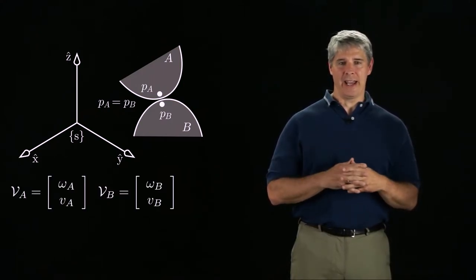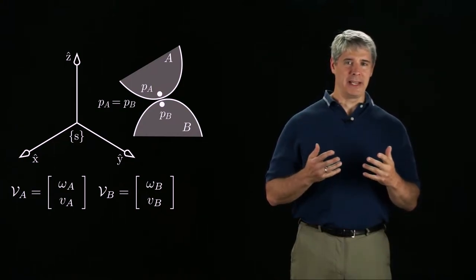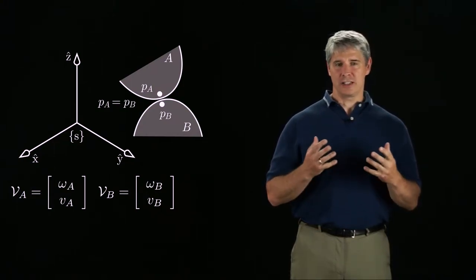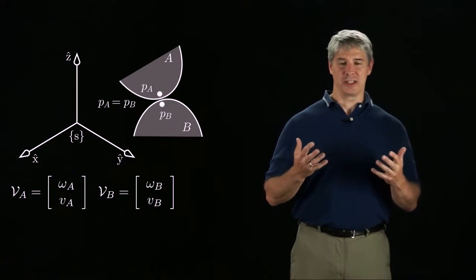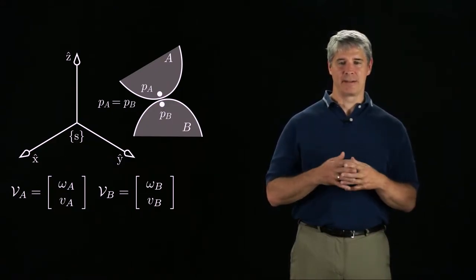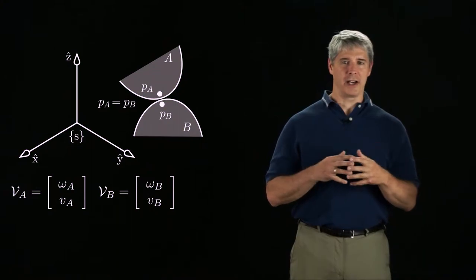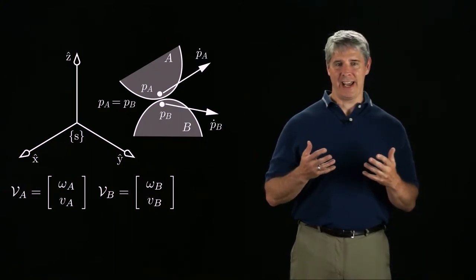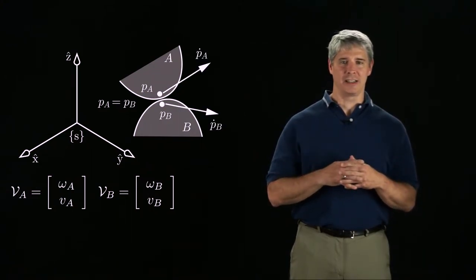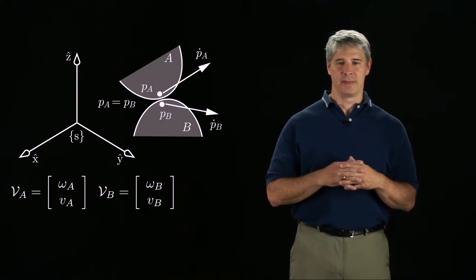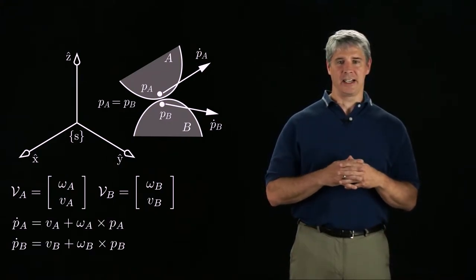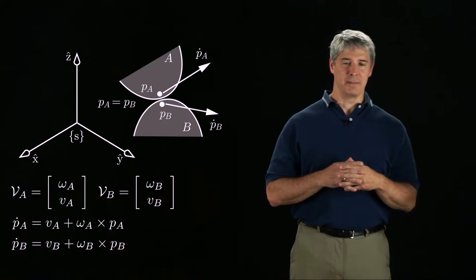The twist of body A is VA and the twist of body B is VB. These twists, and by default all twists in this chapter, are expressed in the space frame S. The twists of the two bodies result in velocities P dot A and P dot B of the current contact points on the two bodies. Each velocity is calculated as P dot equals V plus omega cross P.